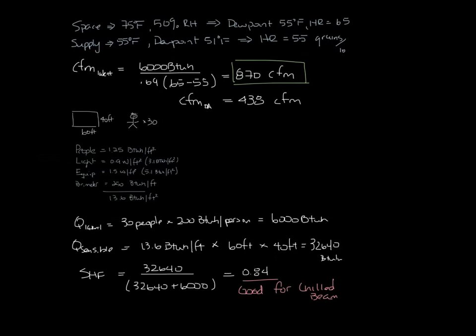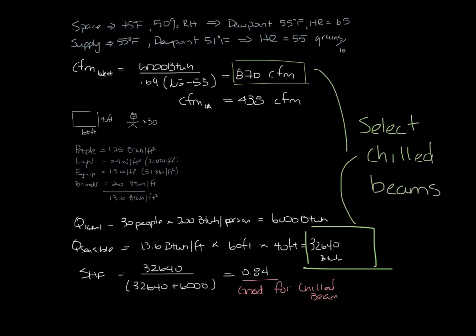Now look down here, you can see our sensible load is 32,640 BTU, and we just calculated our airflow at 870 CFM, and that's how we'll select our chilled beams.